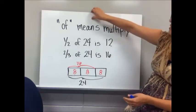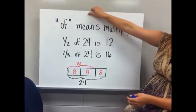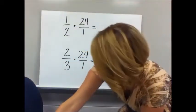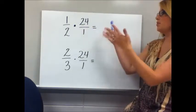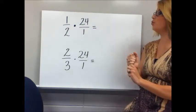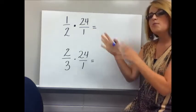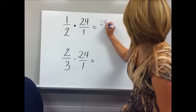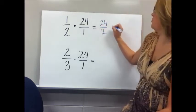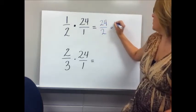Let's see how this applies to actual multiplication. 1 half times 24. When you're multiplying with a fraction, put it over one, and if you multiply across you get 24 over 2, which makes 12.